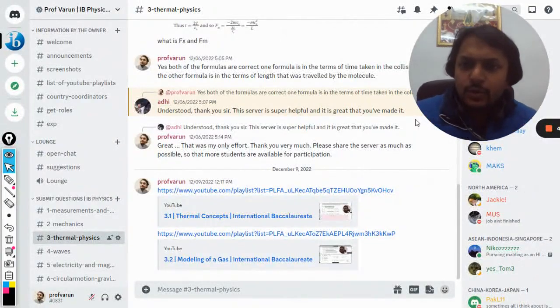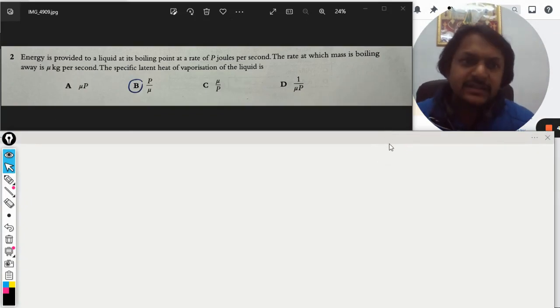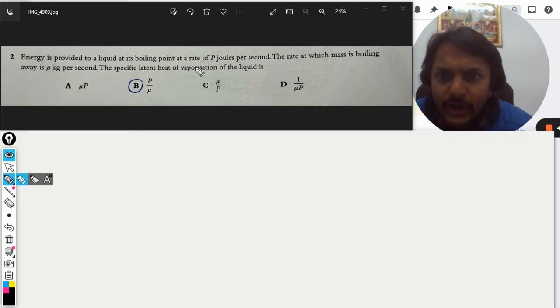Okay dear students, so there is a question I got on Discord and this is that question. Let us see how we are going to do this. Energy is provided to a liquid at its boiling point at a rate of P joules per second.